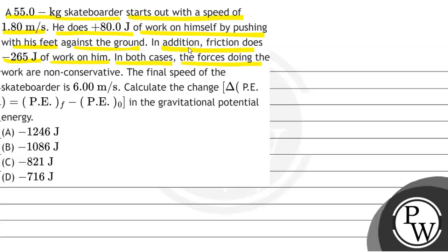In both cases, forces doing the work are non-conservative. The final speed of the skateboarder is 6 meter per second. Calculate the change in the gravitational potential energy. The mass is given, the initial and final speed is given, the total work done is given, and we need to find the change in potential energy.